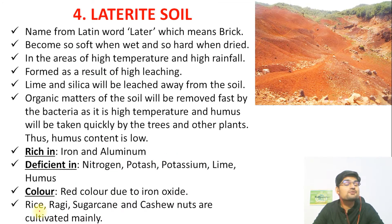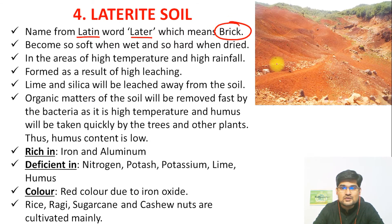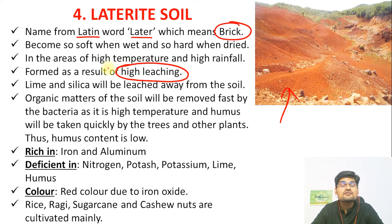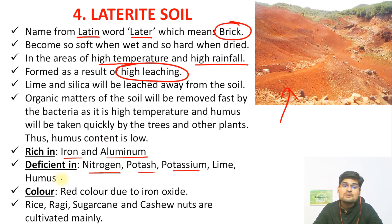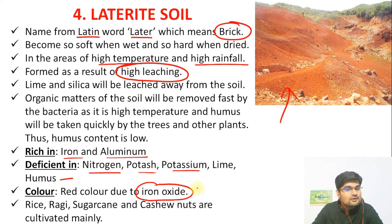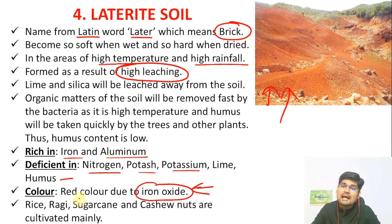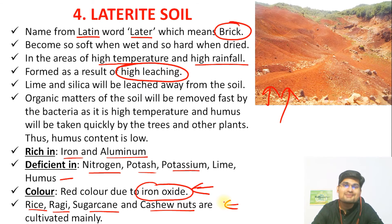Coming to laterite soil formation — from the Latin word 'later' meaning brick — this soil resembles brick and is one of the highly leached soils. High leaching (alluviation) happens in areas of high temperatures and high rainfall. This soil is rich in iron and aluminium but highly deficient in nitrogen, potassium, lime, and humus. Its color varies from red to yellow because of iron oxide. Despite this, it helps grow rice, ragi, sugarcane, and cashew nuts.